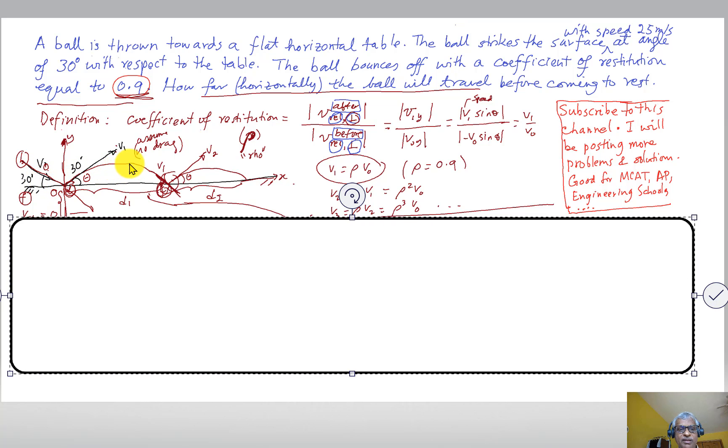Here is the picture to keep in mind: the ball comes in with some v₀ at 30 degrees, then it bounces off like this, another bounce, and continues ad infinitum. This angle is 30 degrees and this v₀ is 25 meters per second, that's what's given.